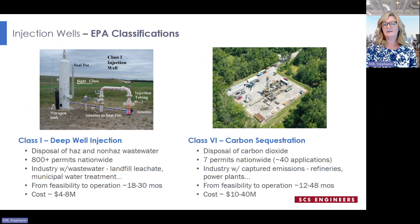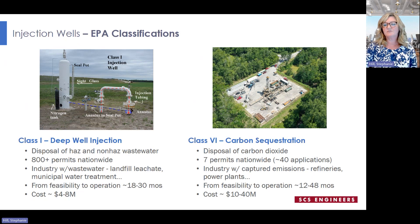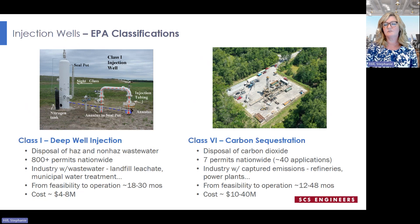The types of industries that use these classes of wells can sometimes overlap. For instance, a power plant may need to dispose of wastewater in a Class 1 injection well and sequester their captured emissions in a Class 6 injection well. The administrative process to obtain a permit is similar in both well classes, but the timeline may be exaggerated in a carbon sequestration well, since there are more stringent numerical modeling requirements, significant demonstration criteria for movement of the injected plume, and strict steps to ensure environmental justice is addressed. Likewise, the greater effort for a carbon sequestration injection well carries a much larger price tag.